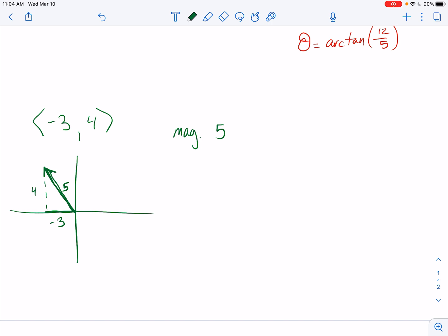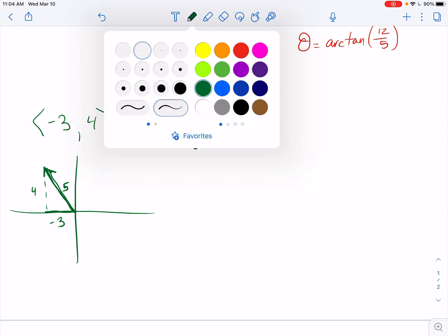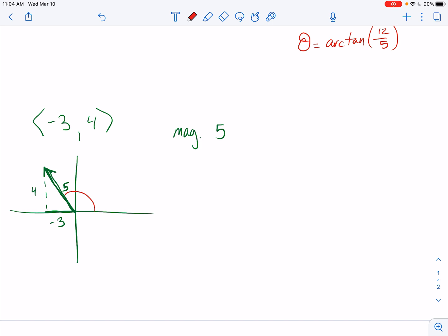And then what we can look at here is to find this theta getting us to here. Keep in mind that arctan is only going to, it's going to live, it's going to give me this value right here. So if I, when I say arctan of, if I say theta is equal to arctan of, what does this become, negative 4 thirds,